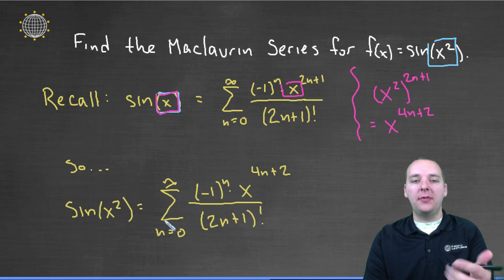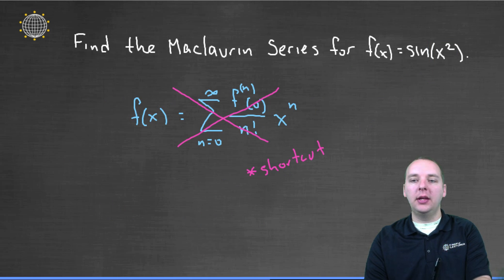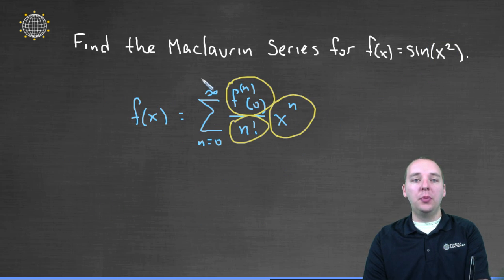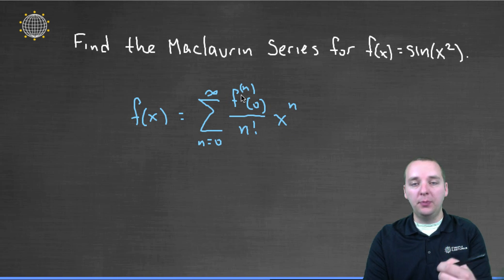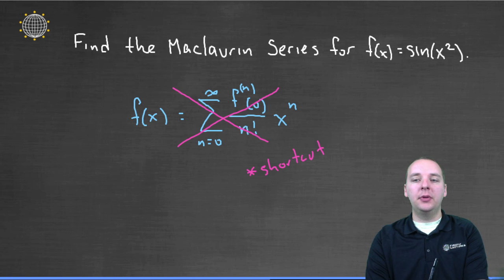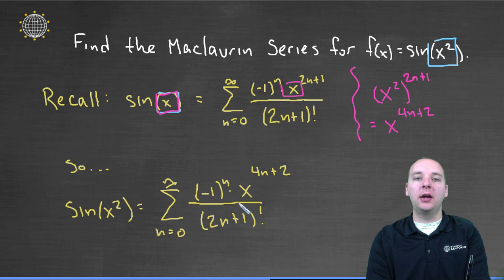So I think that was a lot faster. Now if we had worked it out the long way, if we had actually used the formula for a Maclaurin series and actually went through and did a bunch of derivatives and plugged in zero and looked for the pattern and all that sort of thing, we would have come up with this as a final answer.